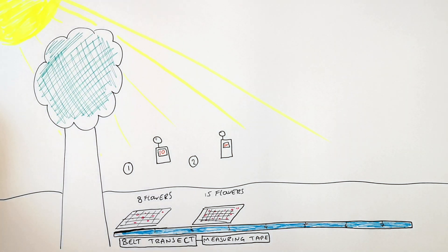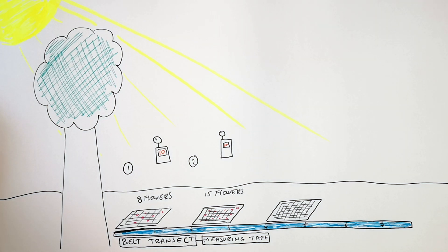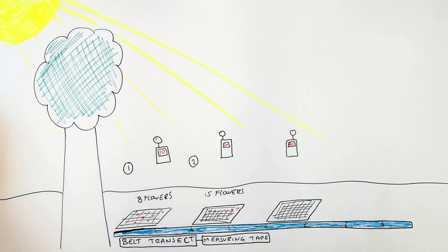You now lay the quadrat 1 metre away and count the flowers and measure the light intensity. We are now further away from the tree so the light intensity is higher and it is 40. Then count the number of flowers. In this quadrat there are 29 flowers. You then lay the quadrat for a final time.